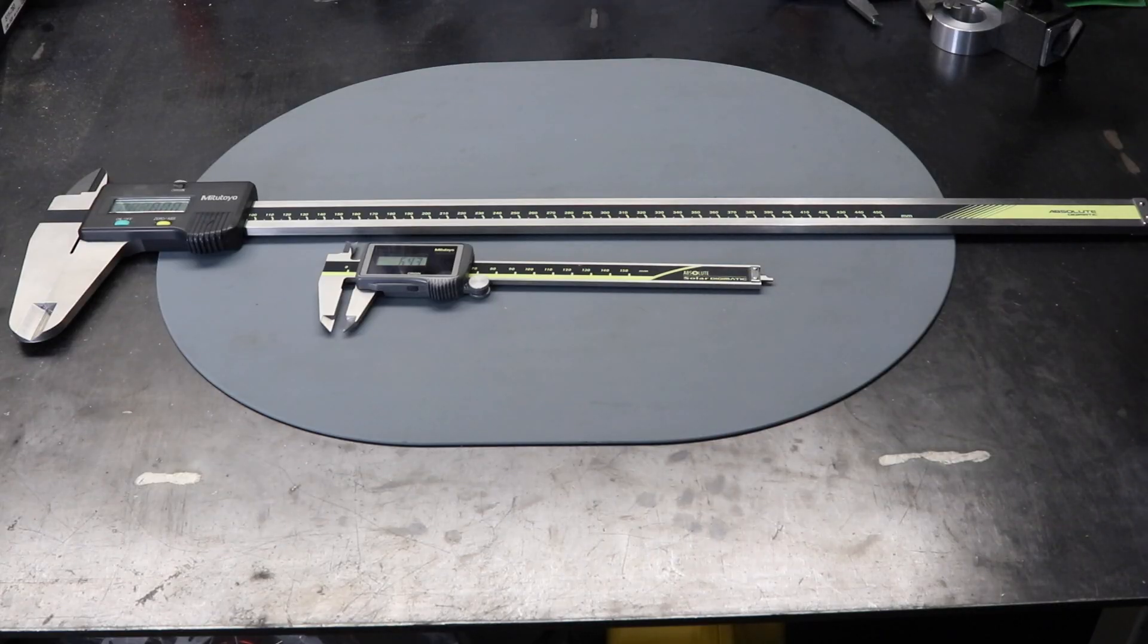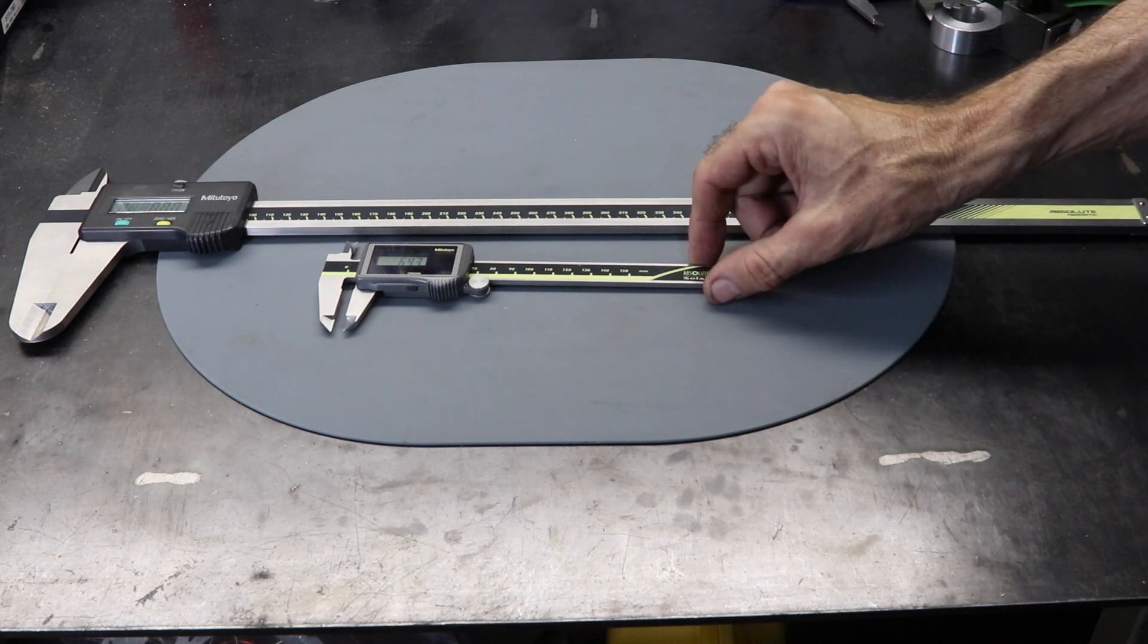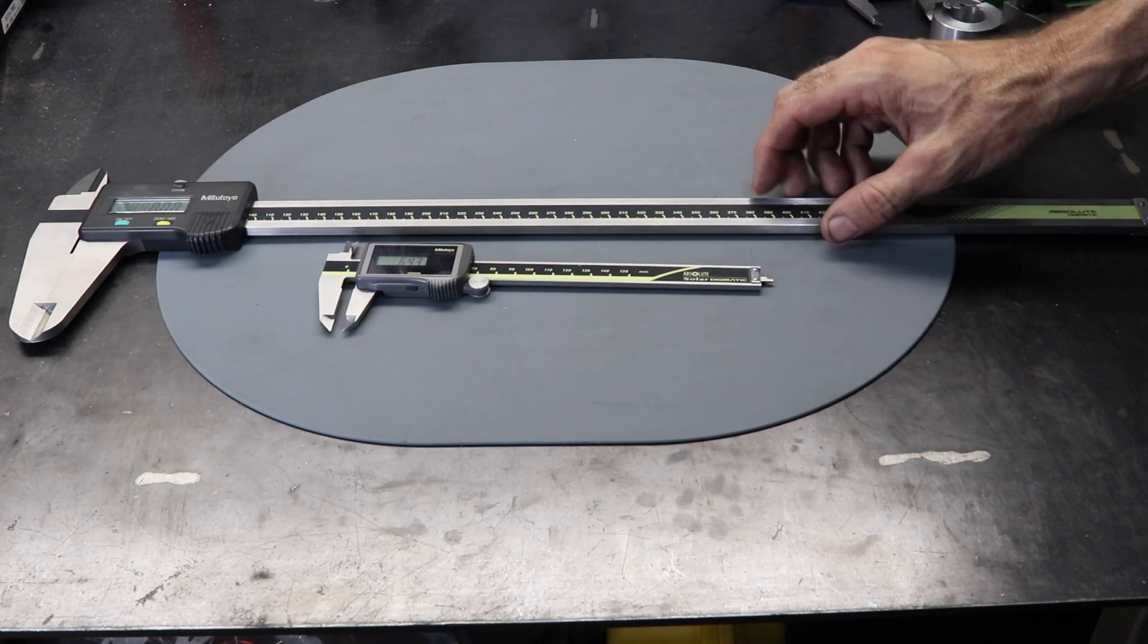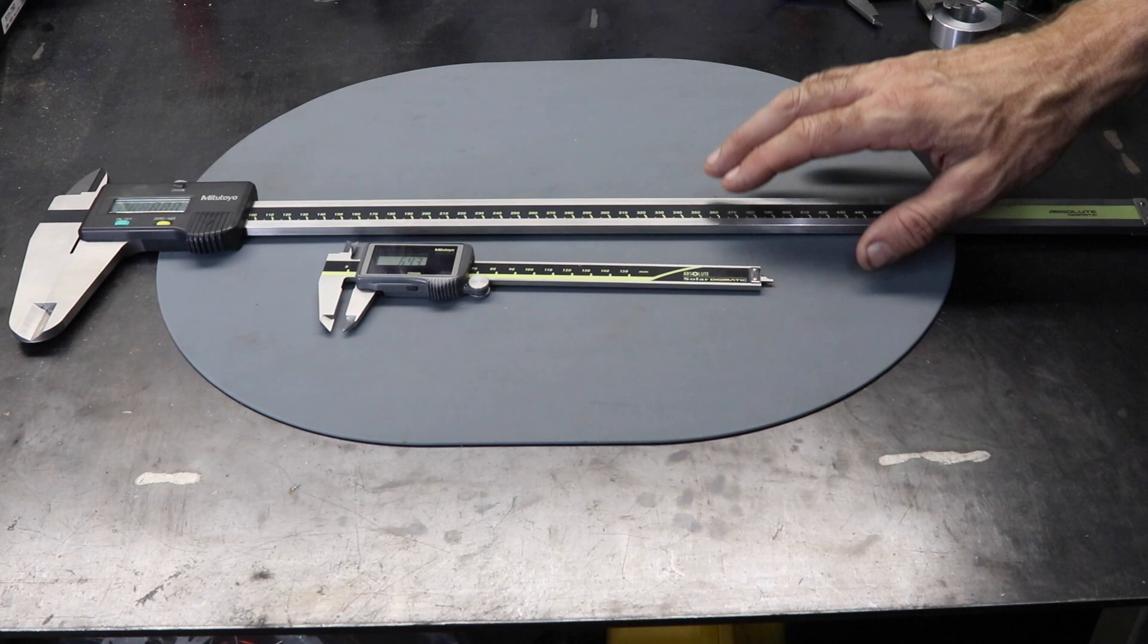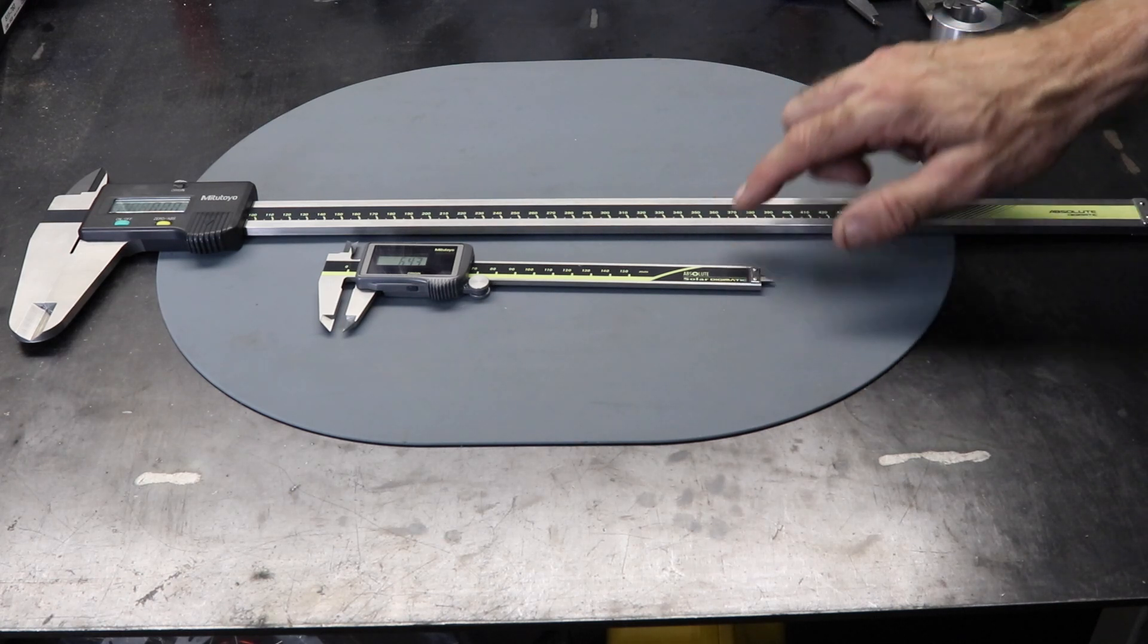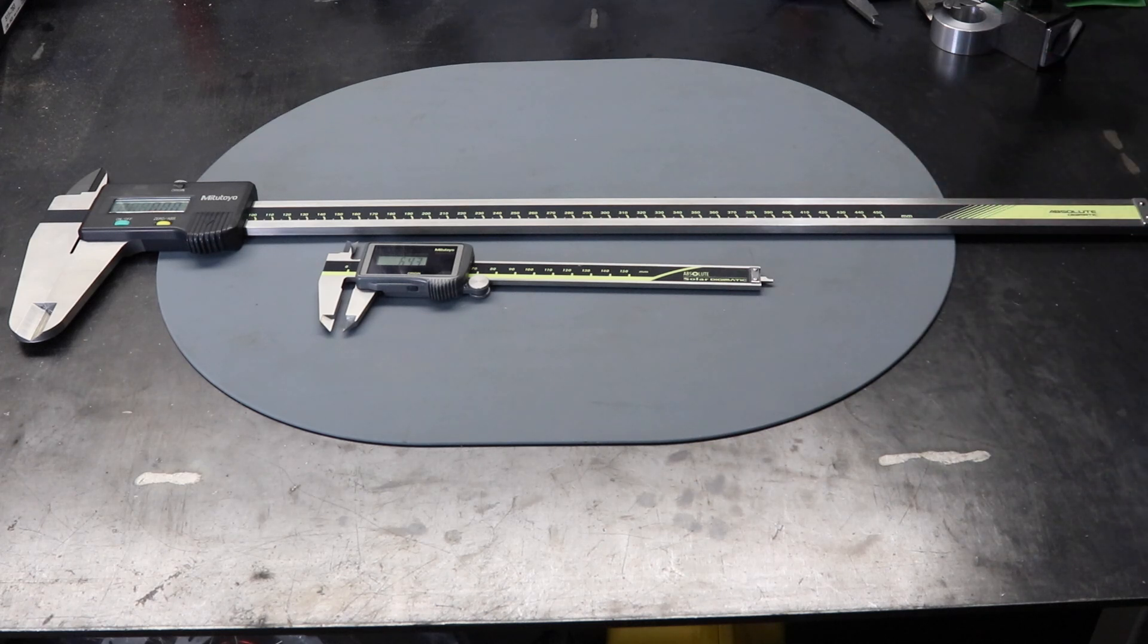To finish up, you can see my 450mm Mitsutoyo caliper compared to my 150. For motorcycle maintenance jobs you don't really need a caliper this large. But it is handy for engineering work and just thought it would be fun to show that you can get large size calipers as well.